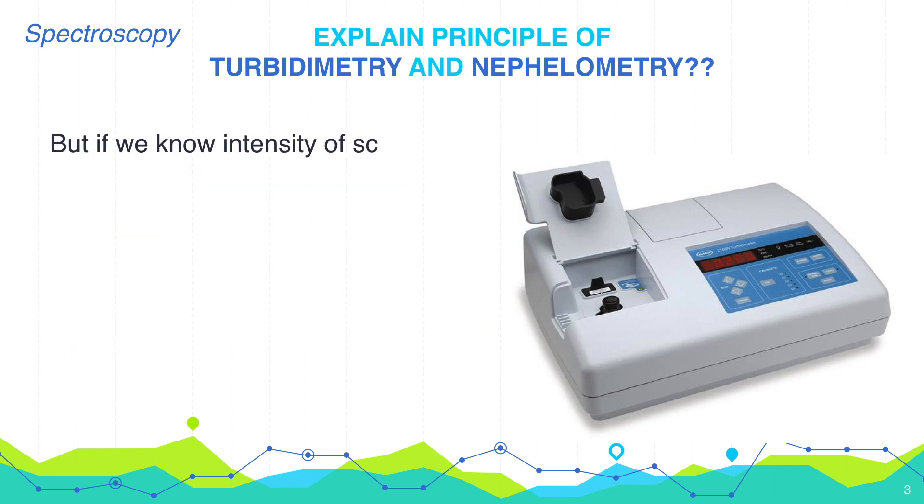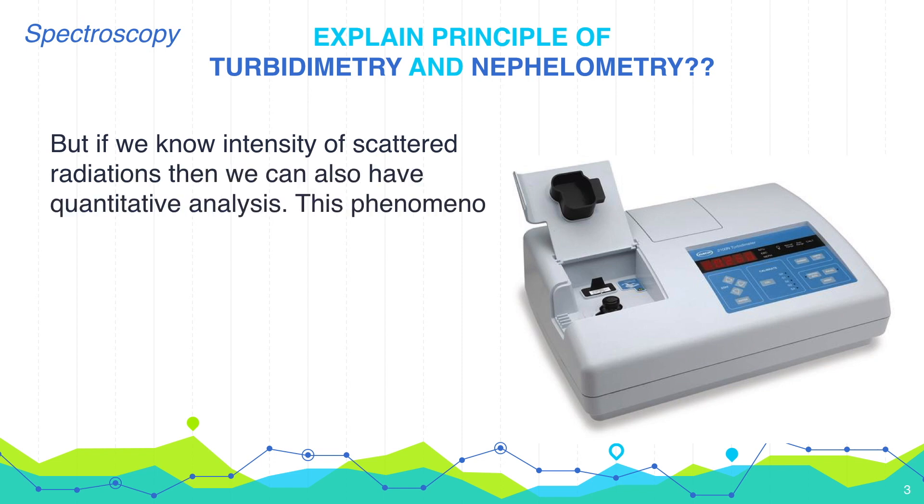But if we know intensity of scattered radiation, then we can also have quantitative analysis. This phenomena is known as Nephelometry.